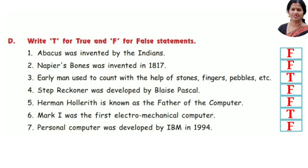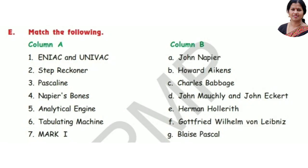Number six: Mark One was the first electromechanical computer — True. Number seven: personal computer was developed by IBM in 1994 — False.